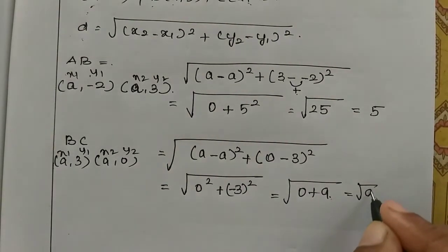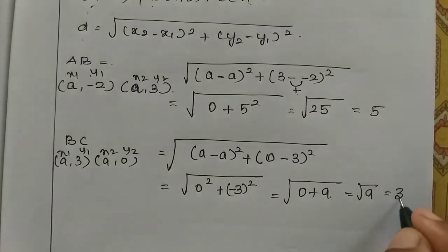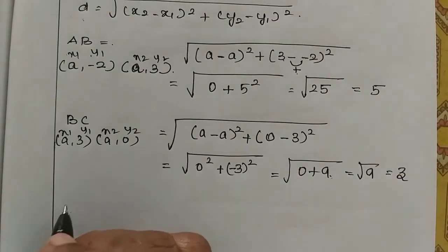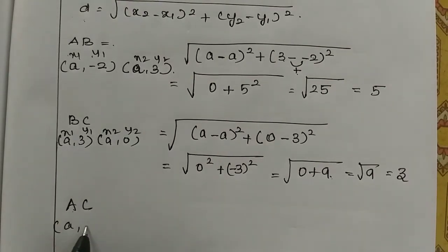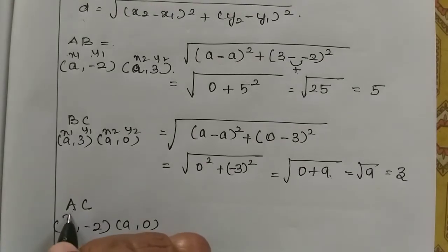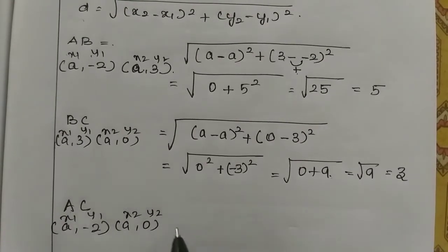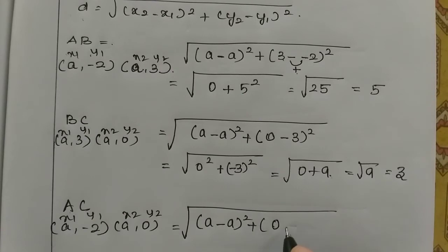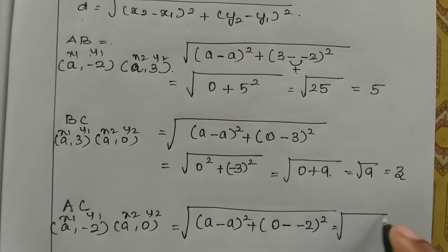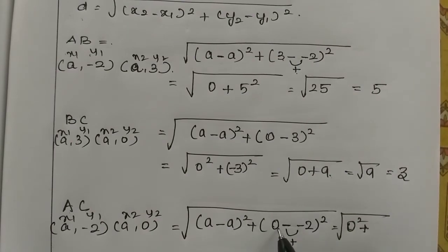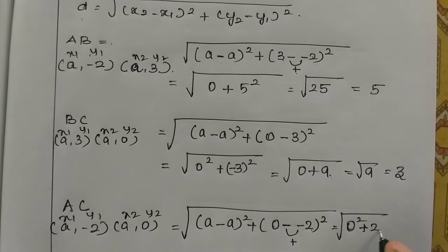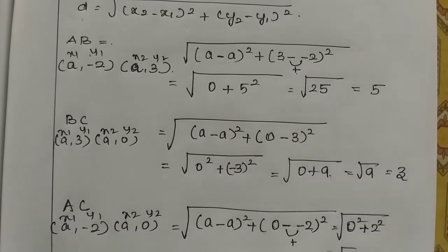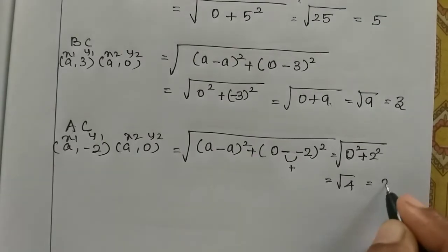Root 9 is 3. So BC equals 3. Next, AC: A is (a, minus 2) and C is (a, 0). So x1, y1, x2, y2. Root of (x2 is a minus x1 is a) the whole square, plus (y2 is 0 minus y1 is minus 2) the whole square. So a minus a is 0, 0 squared plus minus into minus plus, 0 plus 2 whole squared is 2 squared, which equals root of 4, so root 4 is 2. AC equals 2.